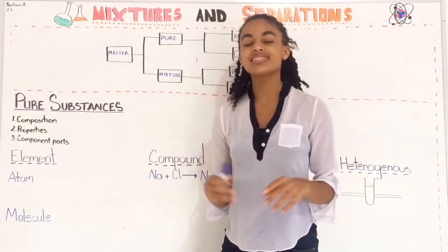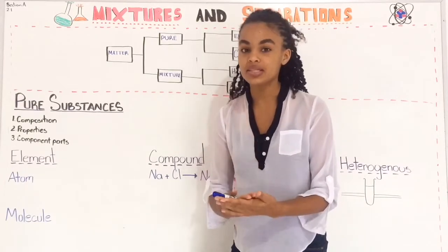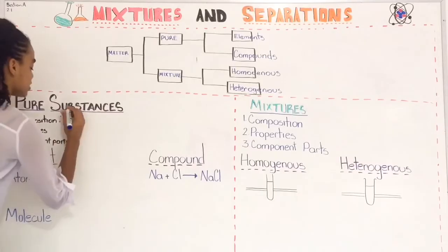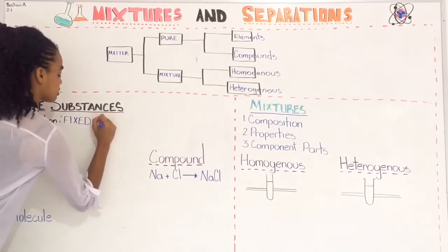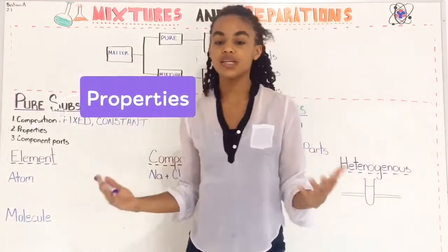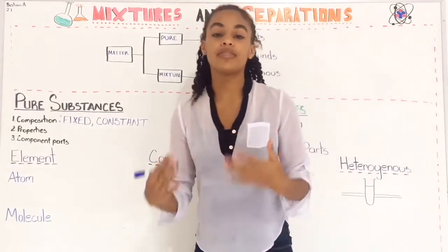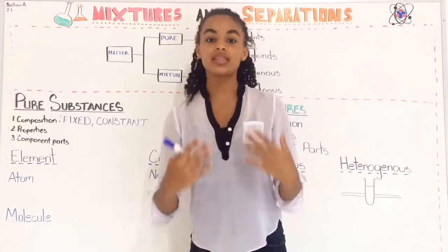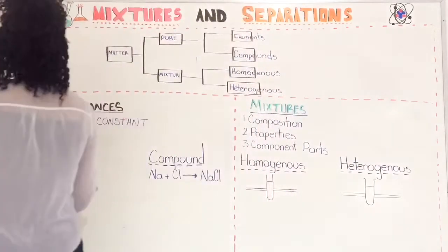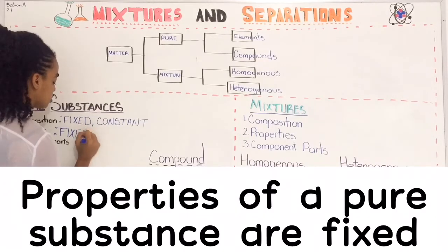The composition of a pure substance is fixed — it doesn't change. Why? Because a pure substance is made up of the same kind of element or the same kind of component, so we say the composition is fixed or constant. The properties of a pure substance are also fixed; they don't change because the same element or compound makes up these pure substances. So their properties are going to be consistent or constant.